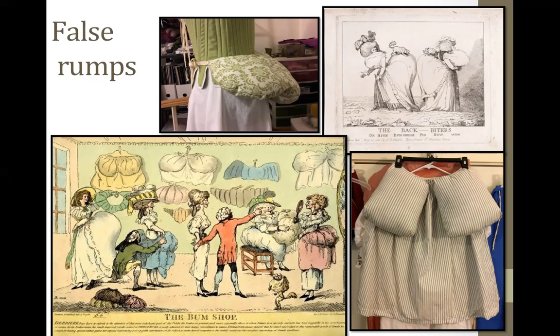The false rumps could be filled with ground cork — save those wine bottle corks — or feather down. I filled mine with polyester fill, which makes me cringe, but I plan to use them for a long time. The satirical cartoons on this slide definitely exaggerate the actual size of the supports, but when you have them on they can certainly feel this big. You have to readjust your sense of personal space or you'll end up knocking things off tables — or just knocking into walls.